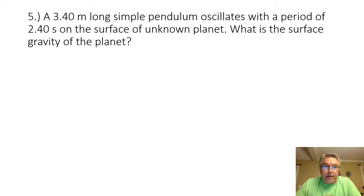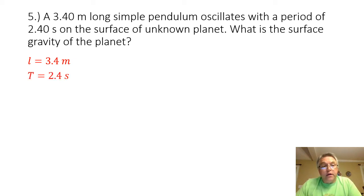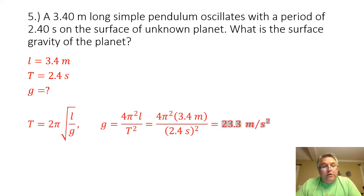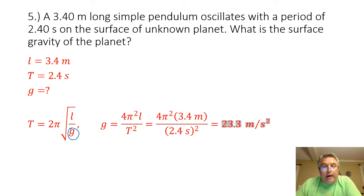Problem five: a 3.40 meter long simple pendulum oscillates with a period of 2.40 seconds on the surface of an unknown planet. What is the surface gravity of the planet? We are given the length of 3.4 meters and the period of 2.4 seconds, and we want to find the gravitational acceleration. Starting with the pendulum formula T equals 2π times the square root of L over g, in this case we are solving for g which is inside the radical.